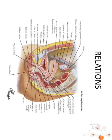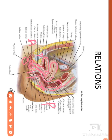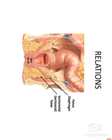In the sagittal view of the female pelvis, the anterior relations of the anal canal are the vagina and the urethra, along with the pubic symphysis. The female pelvic organs visible include the fundus of the uterus, cervix, vagina, vaginal orifice, labium majus, and labium minus. Posteriorly in both males and females, the relations are the coccyx and the anococcygeal raphe.